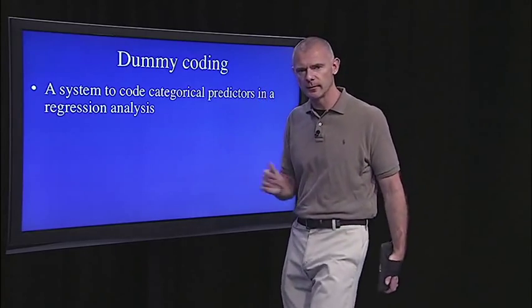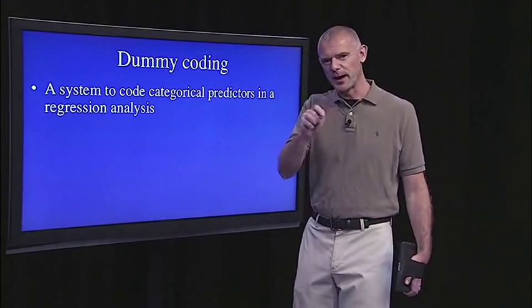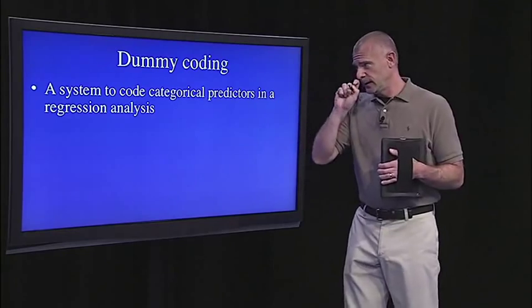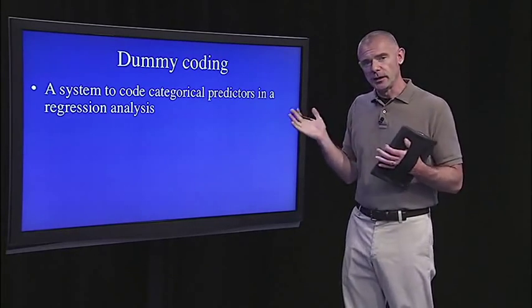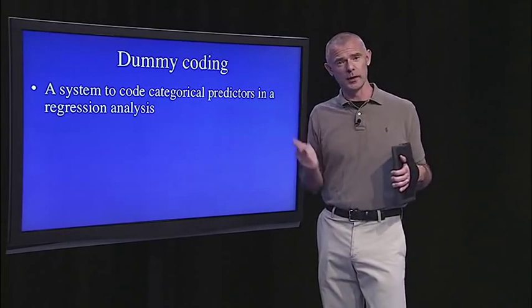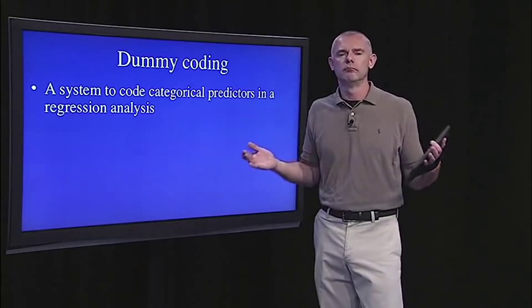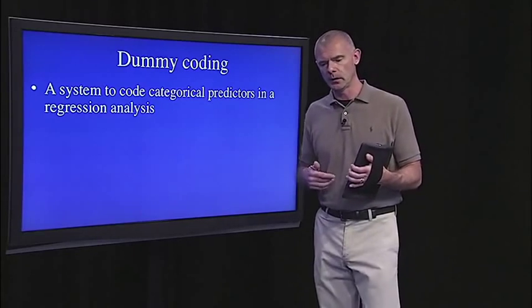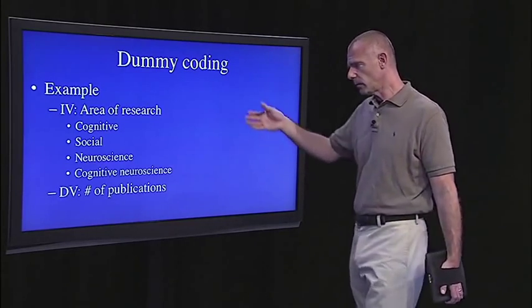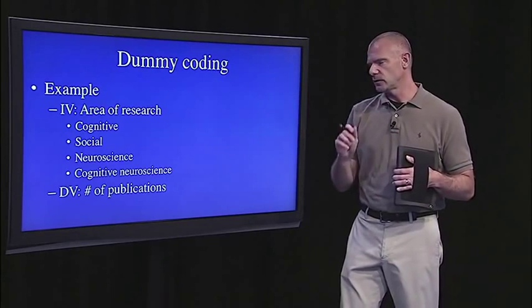The second technical detail — bear with me, it's a long segment — is dummy coding. You may have seen this before. We didn't have to deal with it in the simple example from the first segment because there were just two levels of the categorical predictor — SES, high or low. But what if you have a categorical predictor with lots of levels? Then you need to come up with some coding scheme to enter into the regression equation. To demonstrate this, I'll use a variant of that faculty salary example we've used before.